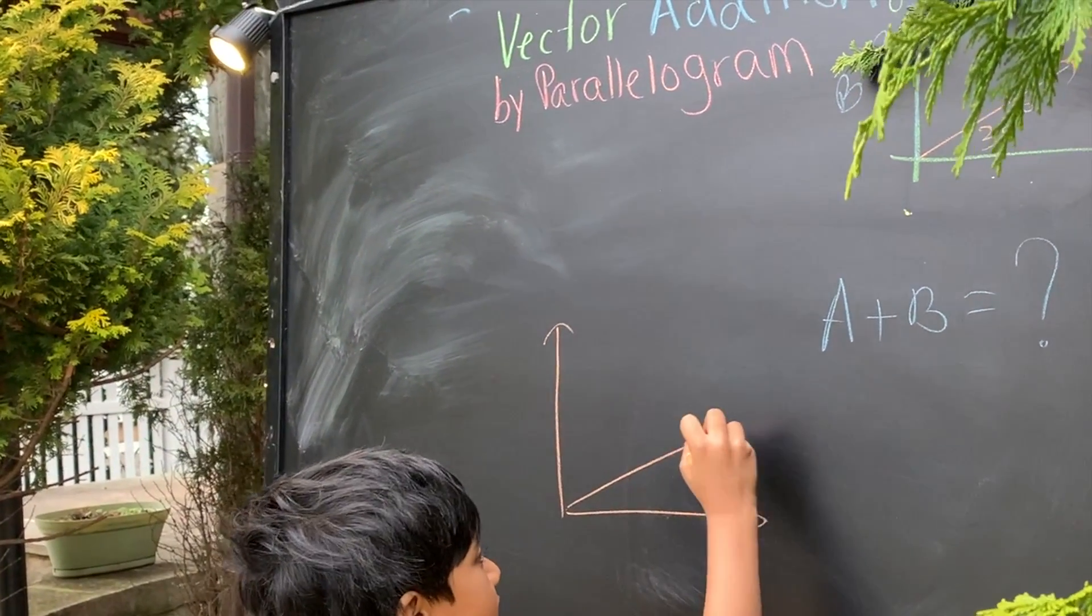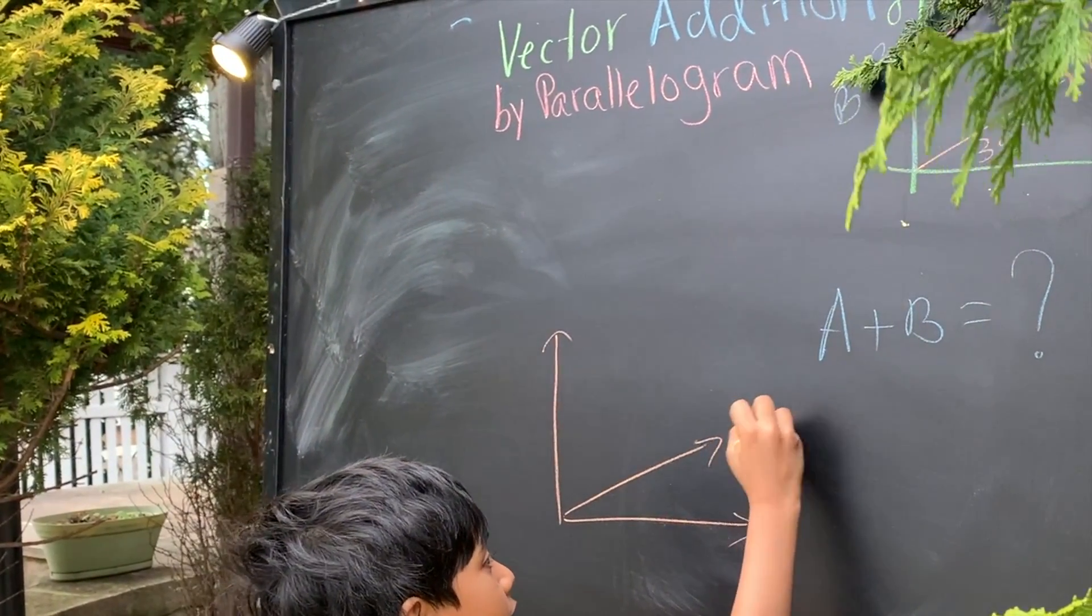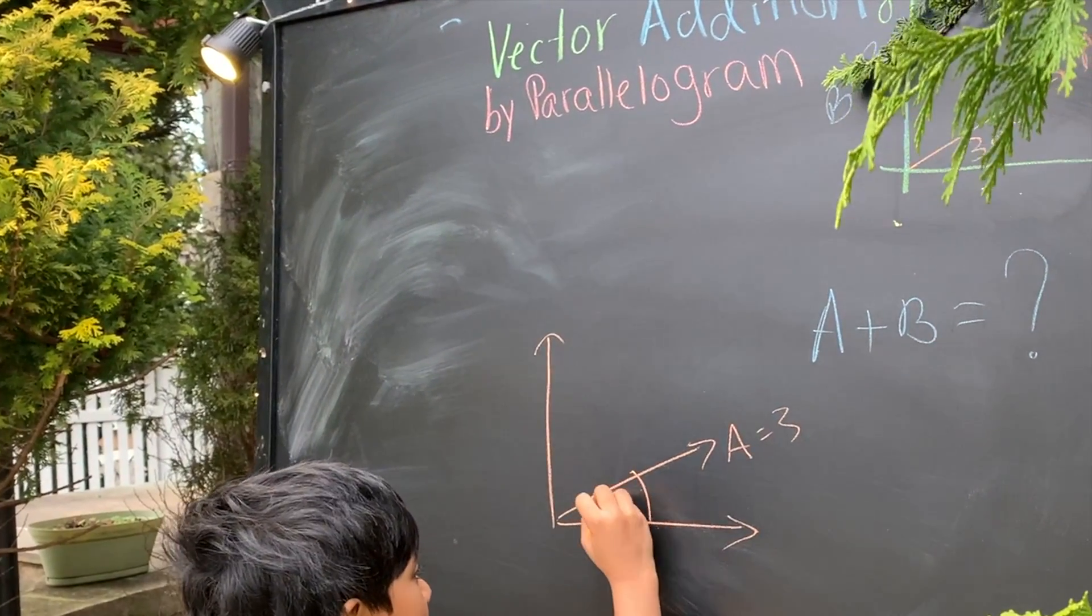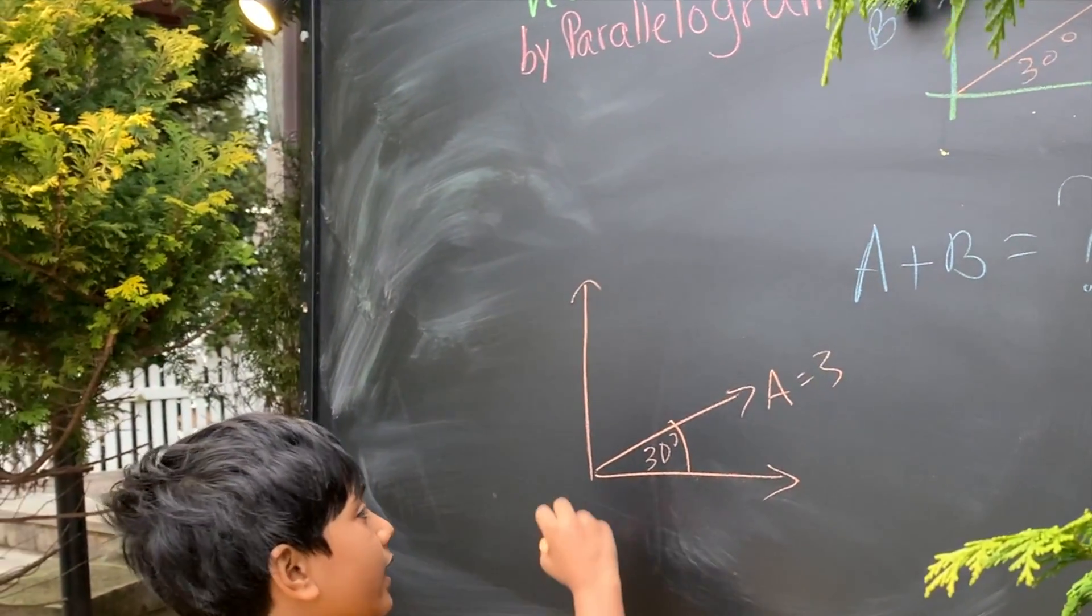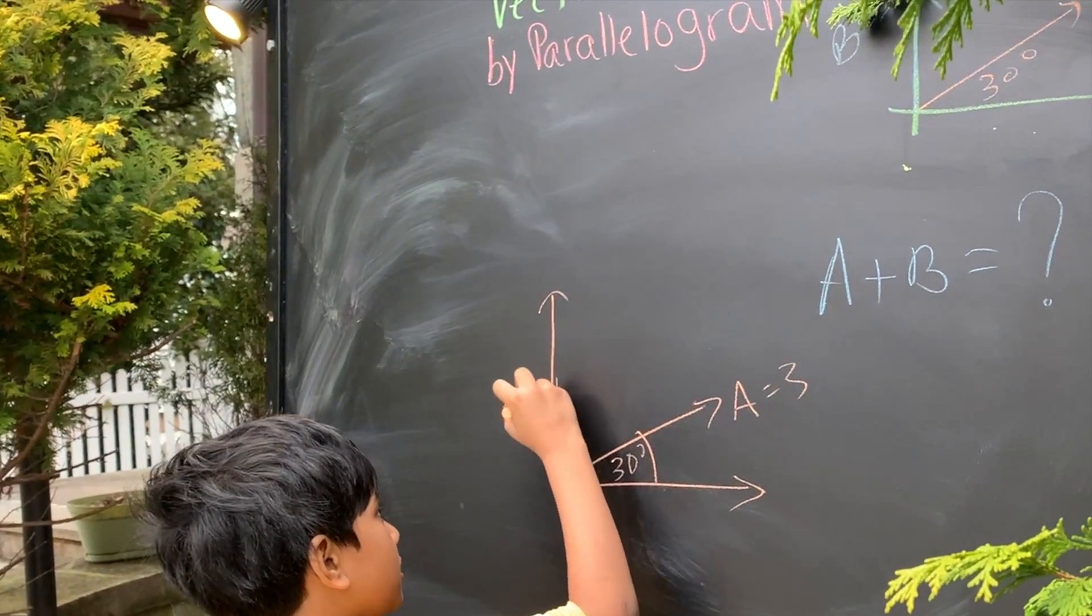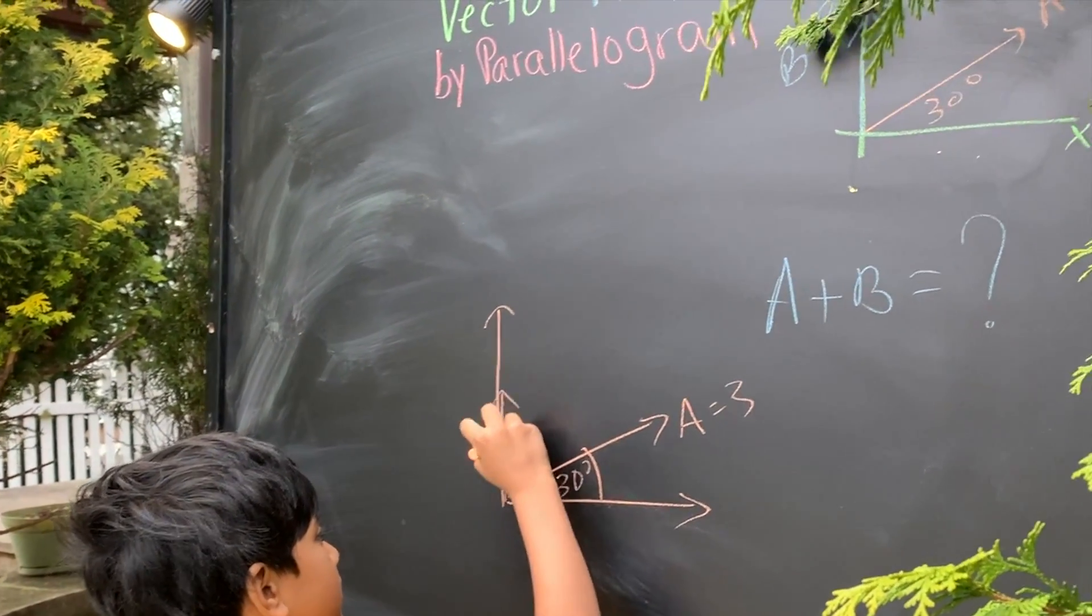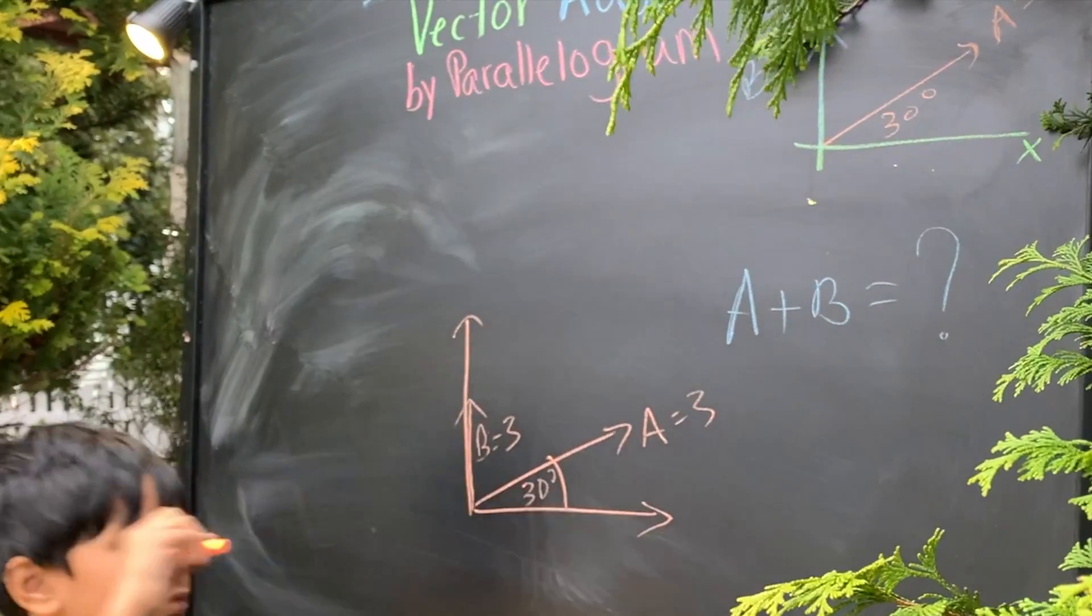This is a 30 degree angle, in which a is equal to 3. And then we'll have b, which is vertical, 90 degrees, and is also 3.